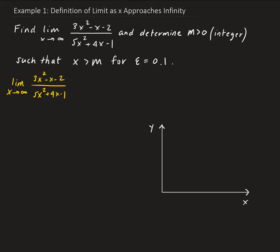This is a rational function. If you remember from pre-calc, the way you can find the horizontal asymptote is by taking the ratio of the leading coefficients. We can do that here since the degree in the top is the same as the degree in the bottom. So we get the value of 3/5. Therefore, that's what this limit is equal to.